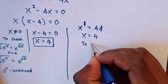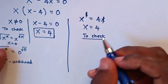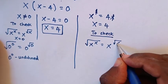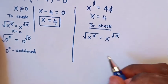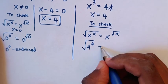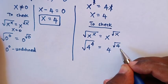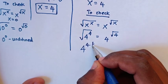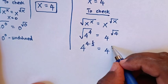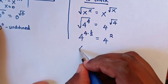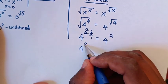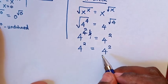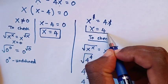Now to check if our answer is correct, we substitute x is equal to 4 into the original problem: square root of 4 power 4 is equal to 4 power square root of 4. This gives 4 power 4 times one-half, which is 4 power 2, equal to 4 power 2, since square root of 4 is 2. The left side and right side are equal, so it is confirmed that x is equal to 4.